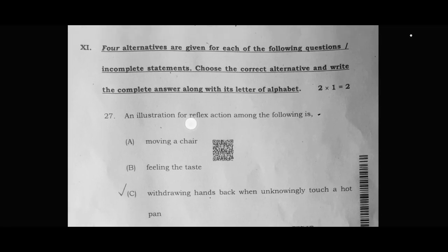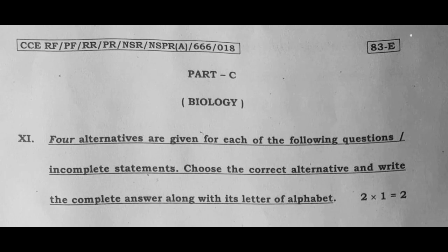Then we have the biology section, you can see here Part C, biology. Here we have two MCQs and four alternatives are given for each of the following questions incomplete statements.